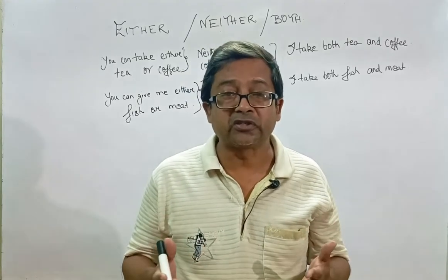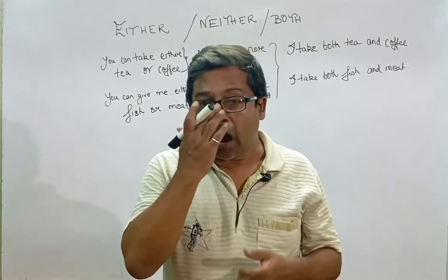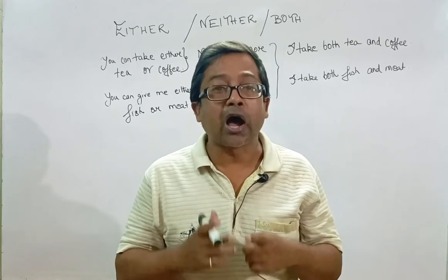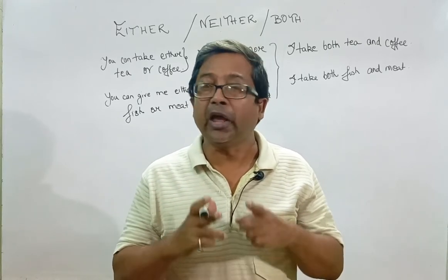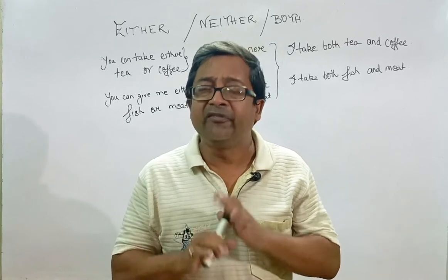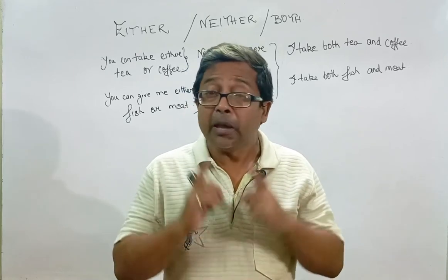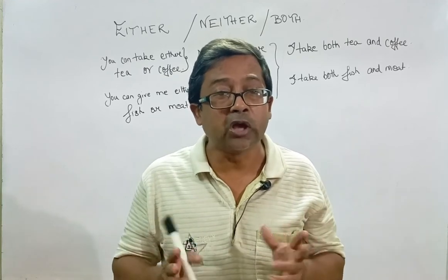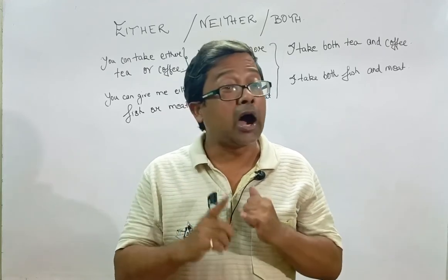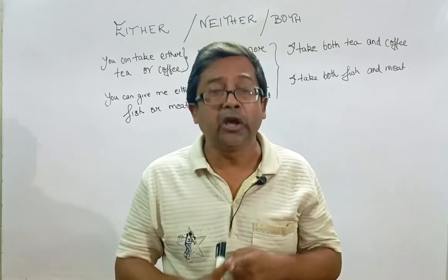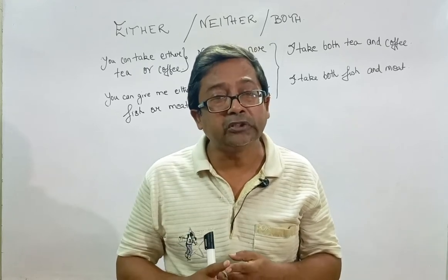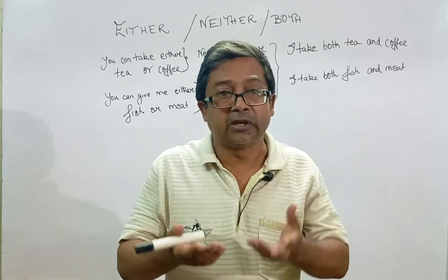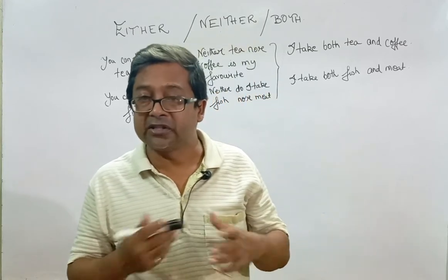Let's start today's session. Today is about how to use either, neither, and both correctly. Keep in mind, we use all three words for two things — either for two things, neither for two things, both for two things. Then where does the twist come? Let's start and see the difference between these three.